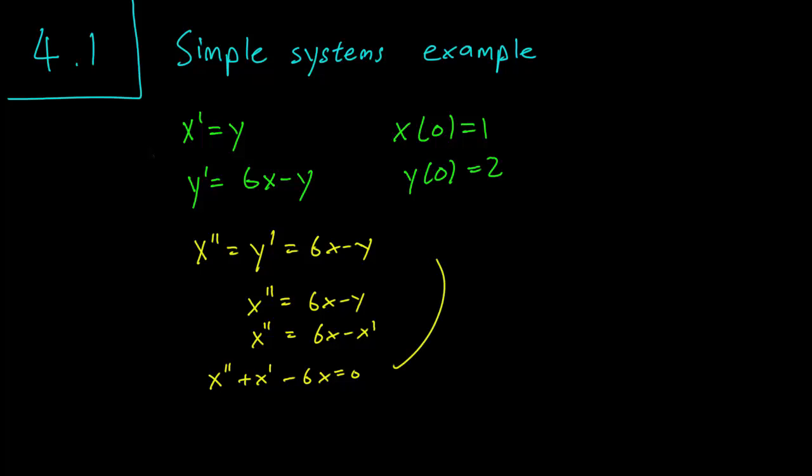Now we can make our usual substitution. x equals e to the rt, and we get e to the rt with the characteristic polynomial r squared plus r minus 6 equals 0. So again, e to the rt cannot ever be 0, and so we have to figure out how to solve this quadratic equation.